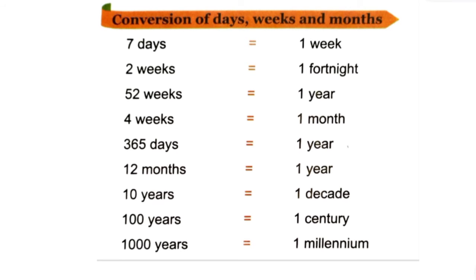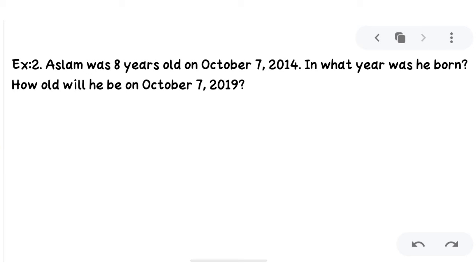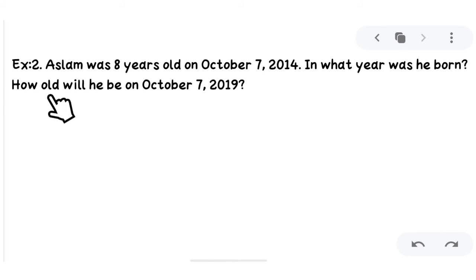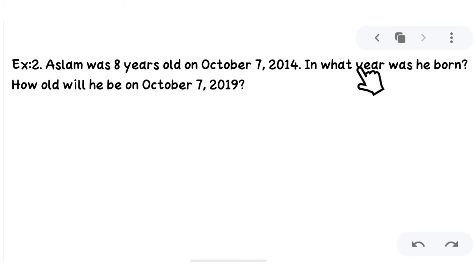One more example. Aslam was eight years old on October 7, 2014. In what year was he born? This is the first part — we have to find his birth year, meaning the year in which he was zero years old. The second part asks: how old will he be on October 7, 2019? In this we have to find out his age in 2019. For the first part, we need to find in which year his age was zero, because when a child is born they are zero years old.